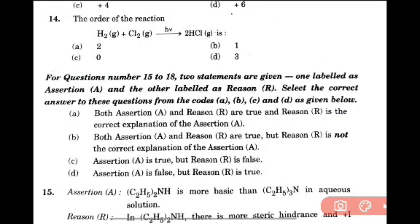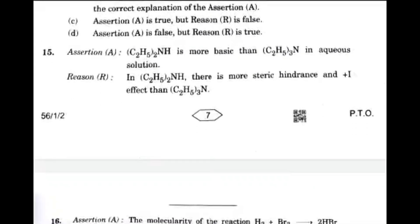And let's check the assertion-reason type questions. Question 15: C2H5NH is more basic than C2H5 thrice N in aqueous solution, and that's because secondary amine has more steric hindrance plus inductive effect than tertiary. So here option C will be the right answer: A is true but R is false.